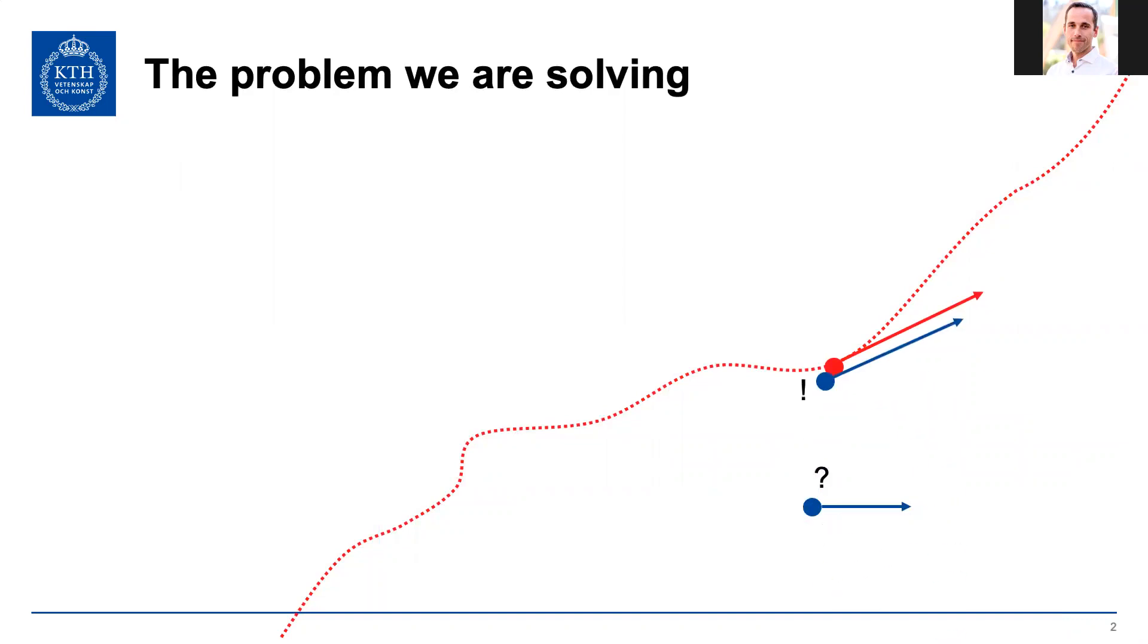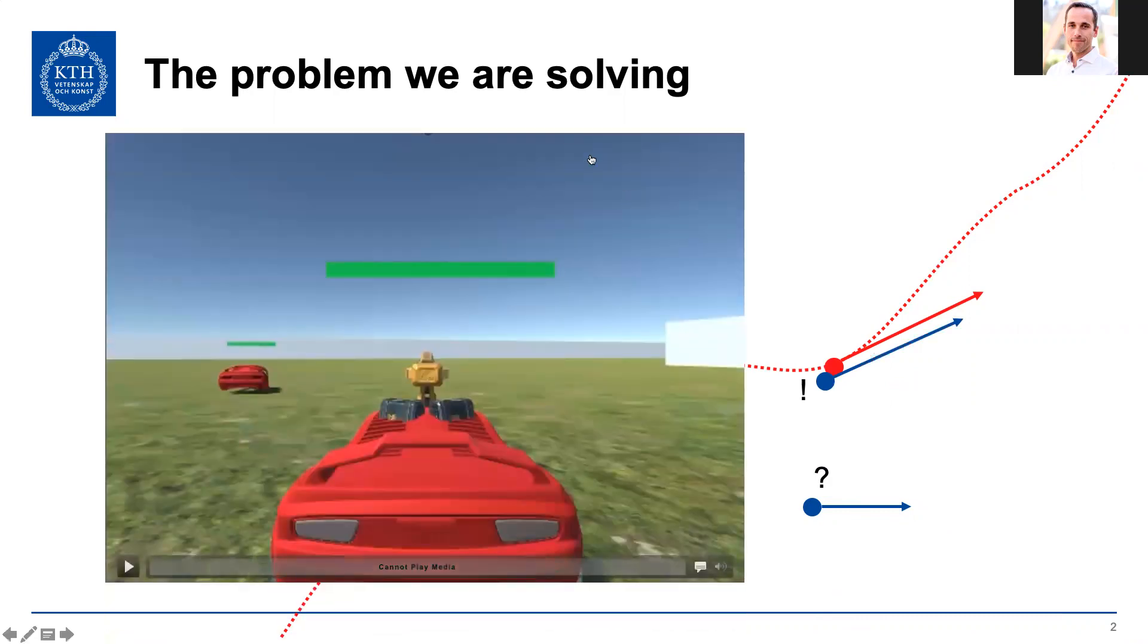So kind of like that, and in fact the blue dot is going to be a car, the Unity car that is shown in this video.